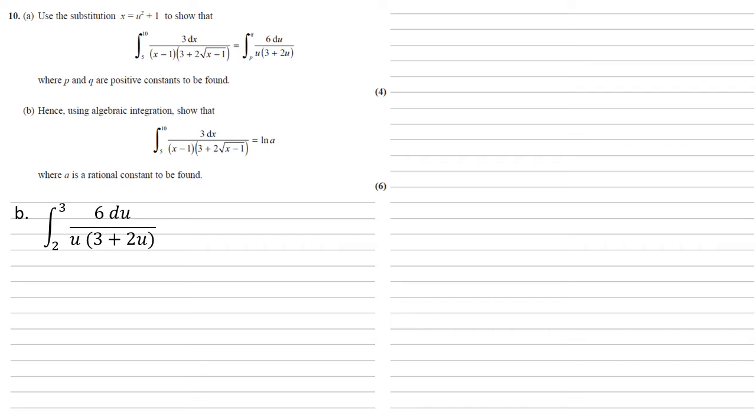This is a fraction with two terms multiplying on the bottom, so to integrate this we're going to need to use our partial fractions to convert this into two fractions. So we're going to set the fraction equal to a over u plus b over 3 plus 2u, and we're going to work out what a and b are.